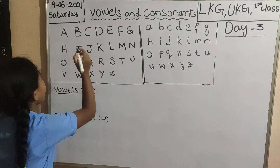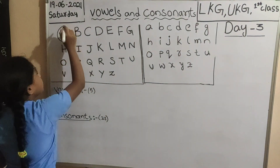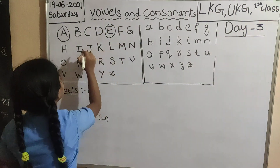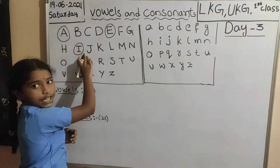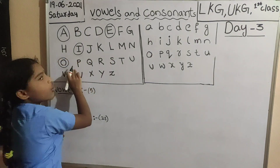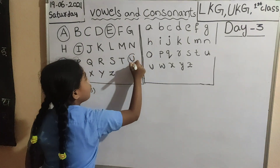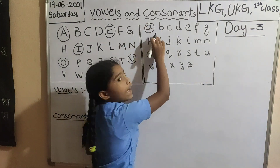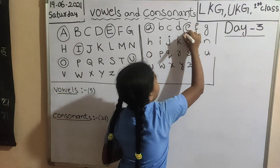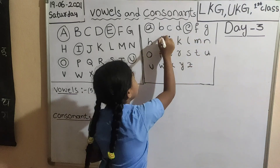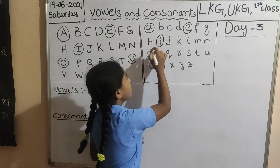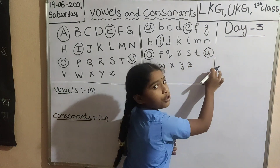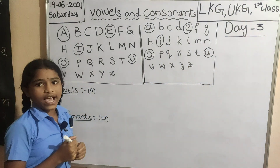Look at the vowels: A, E, I, O, U. Vowels: A, E, I, O, U. There are five vowels.